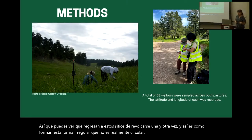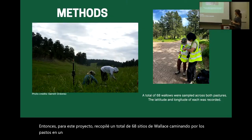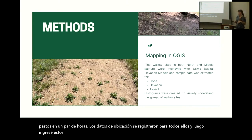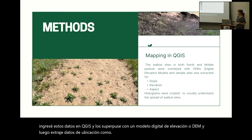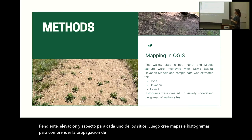For this project, I collected a total of 68 wallow sites by walking the pastures. The location data was recorded for all of them, and I inputted this data into QGIS and overlaid it with a digital elevation model or DEM, then extracted location data like slope, elevation, and aspect for each of the sites. I then created maps and histograms to understand the spread of these sites visually and to further analyze them.